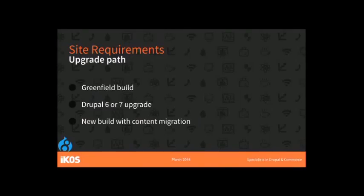Is it a green field — a brand new site from the ground up? Or is it something already in Drupal 6 or 7? Do we need to consider the migration path? Drupal 8 has migration in core now, whereas before it was very much add-on modules. But it was added to core very late and didn't have a UI in the initial release, so you really have to know what you're doing. Or is it a new build with content migration from the existing site?